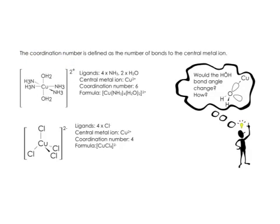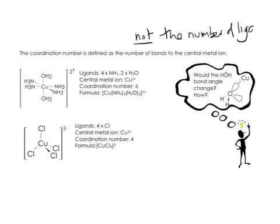Coordination number is defined as the number of bonds to the central metal ion — notice it is not the number of ligands, and that's really important to remember. Here's an example of a complex ion that has six ligands surrounding the metal ion: four ammonias and two waters. The coordination number is six because there are six dative covalent bonds. Here's the formula. This complex would be an octahedral shape with a bond angle of 90 degrees.